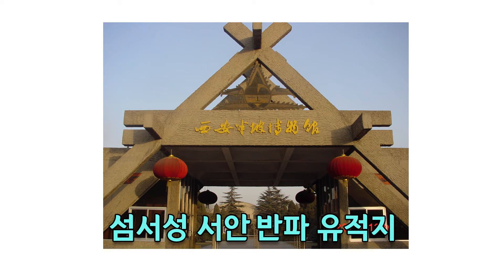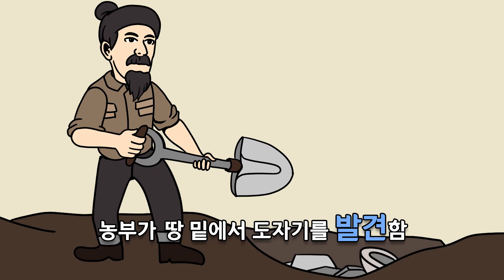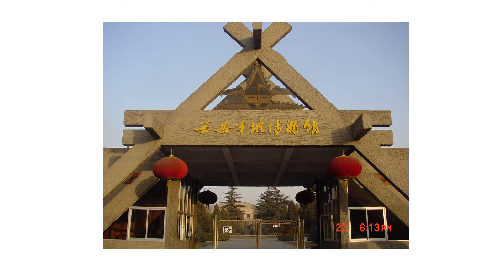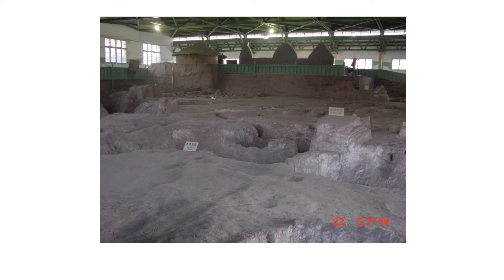이것은 섬서성 서안 동남쪽에 반파라는 유적지가 발견된 것입니다. 어느 날 농부 할아버지가 땅을 파다가 도자기 소리가 나서 문화재 관리국에 신고했고, 그 할아버지는 엄청난 부자가 됐습니다. 땅을 파보니 엄청나게 많은 도자기들이 나왔고, 약 6천 년 전에 사람들이 살던 마을이었다는 것이 밝혀졌습니다. 여기가 반파 유적지로, 지금은 지붕을 씌워 체육관처럼 보호하고 있습니다.